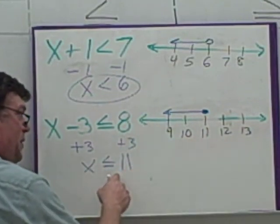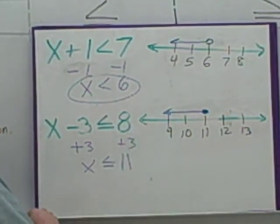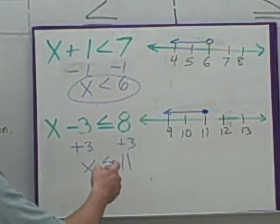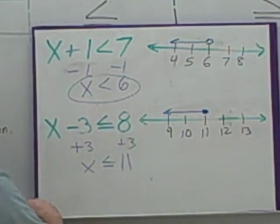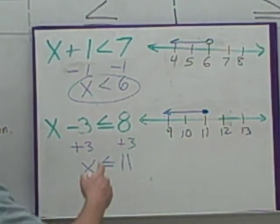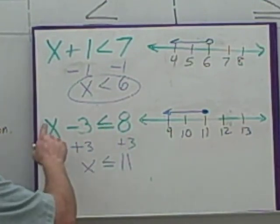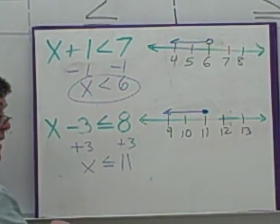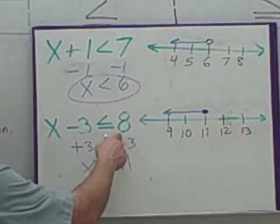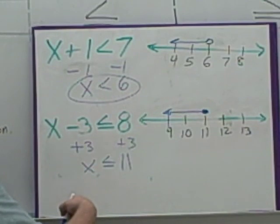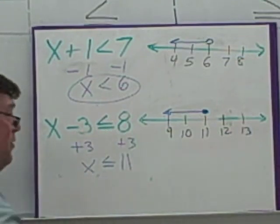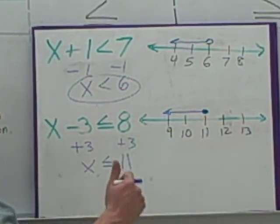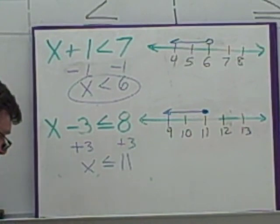Is twelve less than eleven? No, so I don't want to go in that direction. Does it work with the original? Ten minus three is seven — that is less than eight. Nine minus three is six — less than or equal to eight, yes. Eleven minus three equals eight, so we are including it. Twelve minus three is nine, and nine is not less than or equal to eight, so twelve should not be included. Looks like we've got the right solution.